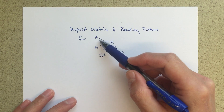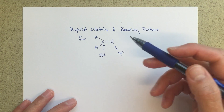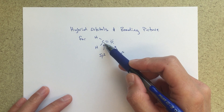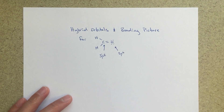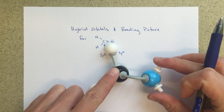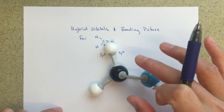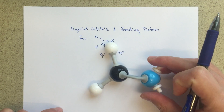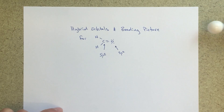Again, I've got 120 degree angles here. If I want to talk about the molecular geometry around this carbon, this would be trigonal planar — trigonal planar, with 120 degree angles between those bonds.